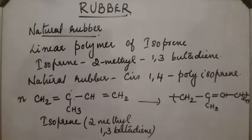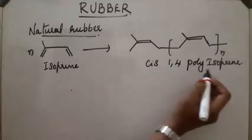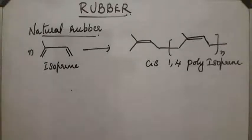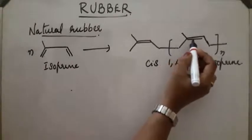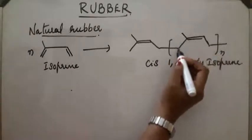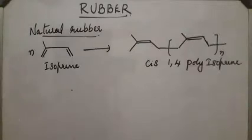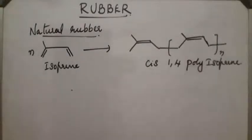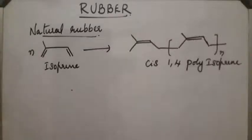Natural rubber is cis-1,4 polyisoprene, obtained from isoprene. It is called 'cis' because, in the case of the double bond, both the bulkier groups are on the same side. So it is cis-1,4 polyisoprene, also called cis-poly-2-methyl-1,3-butadiene.